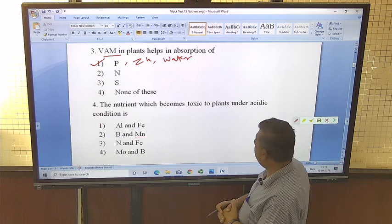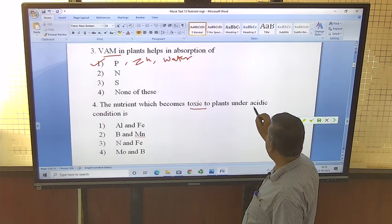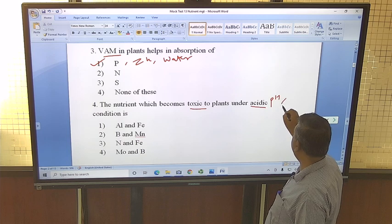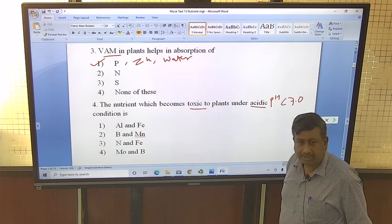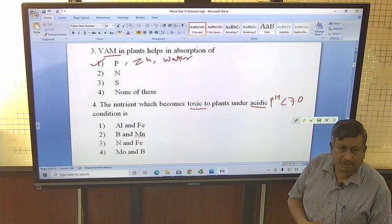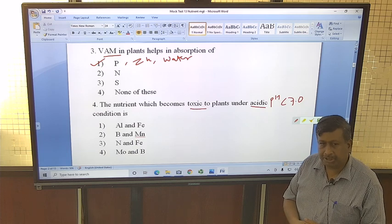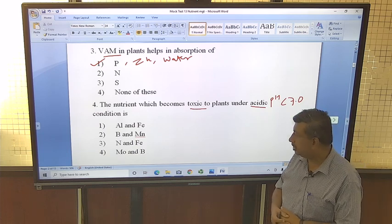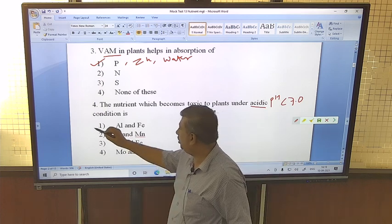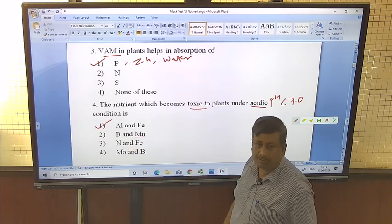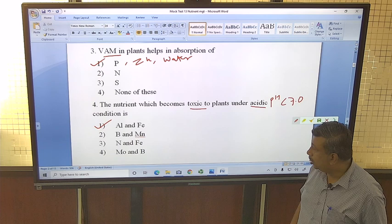The nutrients which become toxic to plant under acidic condition means pH is less than 7. The nutrients which have high solubility under acidic condition show nutrient toxicity. So here, aluminum and iron are more soluble under acidic condition and show toxicity.